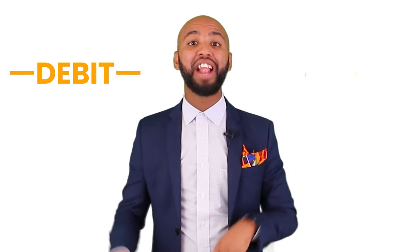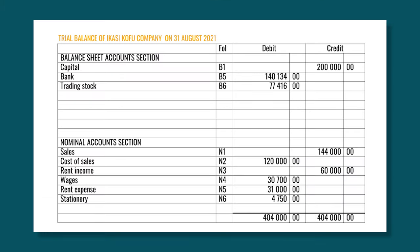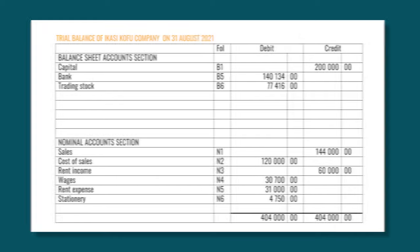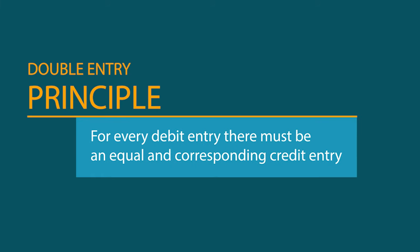Each ledger account has two sides: the debit side on the left and the credit side on the right. This helps simplify recording over time. Entries in the General Ledger are based on the double entry principle. The double entry principle means that every transaction entered on the debit side of an account must also be recorded on the credit side of another account.